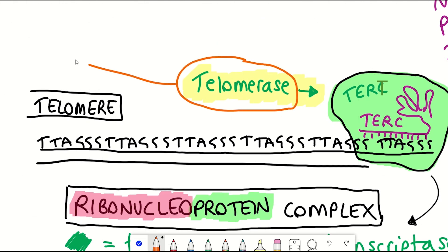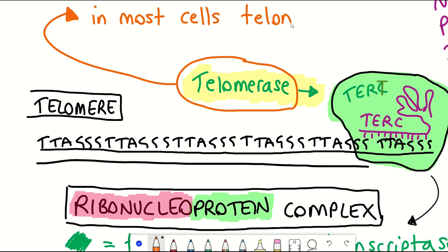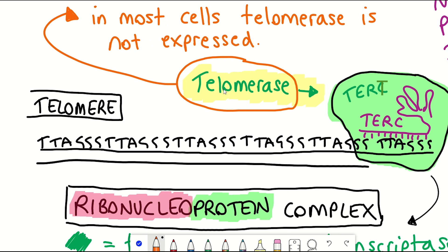The RNA component mediates recognition of the complex to the telomeres, and is known as the telomerase RNA component, TERC. So we have TERT and TERC, which together make up telomerase. In the majority of cells, telomerase isn't expressed, and so the telomeres shorten over time.